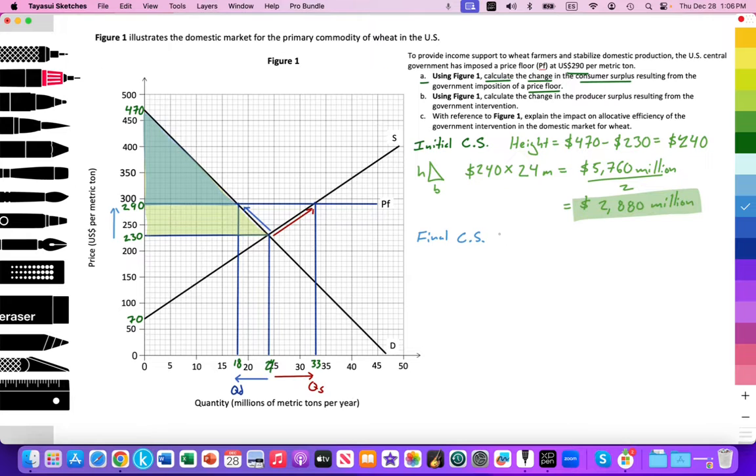Consumer surplus will be reduced because we're paying a higher price, kind of less savings for the consumer. So I follow the demand curve to that new price. And here I see this new triangular area that I'm now going to calculate. So the height for that is going to be equal to, again, 470, the y-intercept, minus the higher price of 290. And that's going to equal 180. So there's my height.